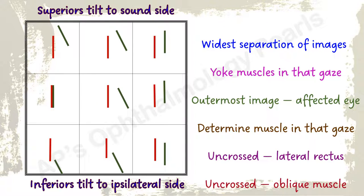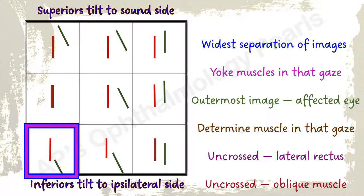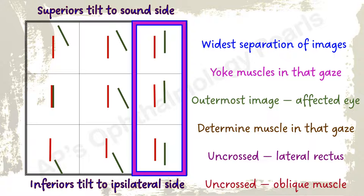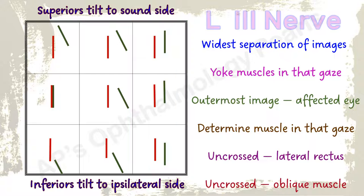Here we see a vertical separation of images in both levo elevation and levo depression, suggesting involvement of both the left superior rectus and left inferior rectus. Levo version is intact, suggesting a normal left lateral rectus action. Crossed diplopia in the right fields of gaze suggests a left medial rectus palsy. This diplopia chart is consistent with a left oculomotor palsy. The crossed diplopia and tilt to the ipsilateral side check out.